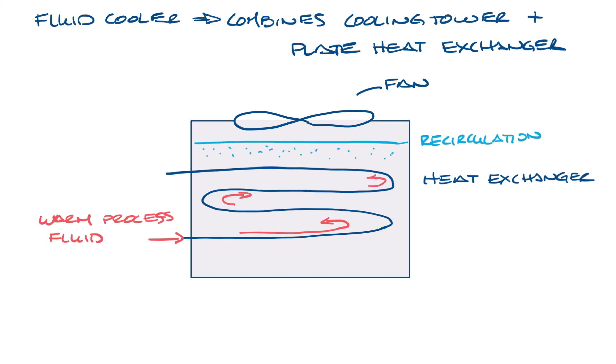Recirculating water is distributed evenly over the coils. It's in a basin up here. Heat is transferred from the process fluid to the recirculating water, cooling the fluid inside the coils, which then goes back to the system.